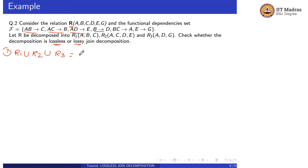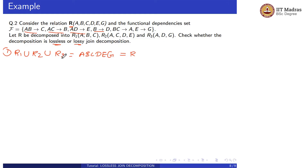R1 is ABC; from R2, A and C are common, adding D and E; from R3, A and D are common, adding G. So R1 union R2 union R3 equals A, B, C, D, E, G, which is our required relation R. First condition is satisfied.